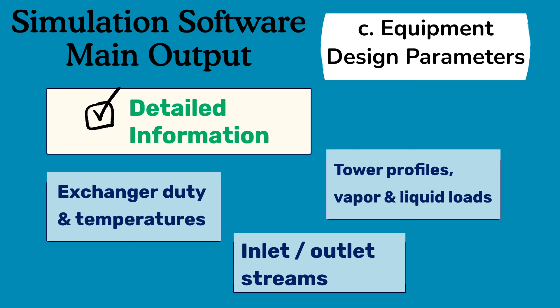By analyzing this data, process engineers can optimize equipment design and selection of main type and internals, ensuring that each piece of equipment shall achieve its function in harmony with other plant components.